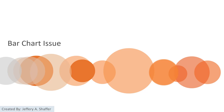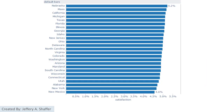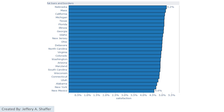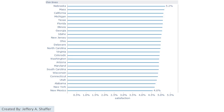Another example shows issues with bar charts when there are many categories. A common problem is that many bars generate what is called the Moiré effect, creating uncomfortable framing effects. Closing the gaps between bars just creates a big blob of blue, while making bars very thin makes it hard to see where each bar ends.